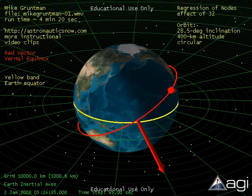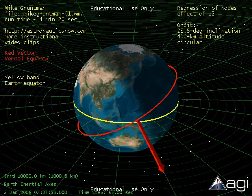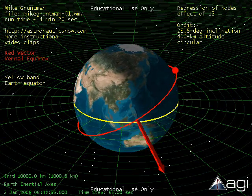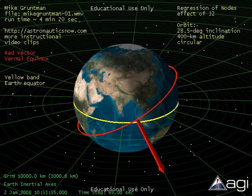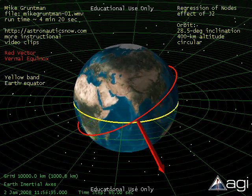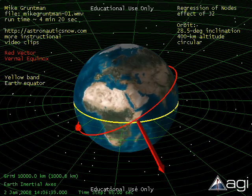The satellite intersects the equator moving from south to north at a point called the ascending node. At the beginning of the simulation, the ascending node crossed the equatorial plane at the location of the vernal equinox vector. That is, right ascension of the orbit was equal to zero.